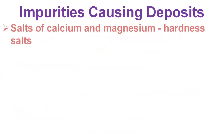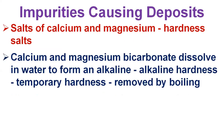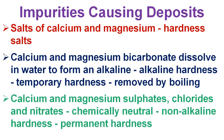The insulating effect of deposits causes the boiler metal temperature to rise and may lead to tube failure by overheating. The most important chemicals in water that influence formation of deposits in boilers are the salts of calcium and magnesium, known as hardness salts. Calcium and magnesium bicarbonate dissolve in water to form an alkaline solution and these salts are known as alkaline hardness.